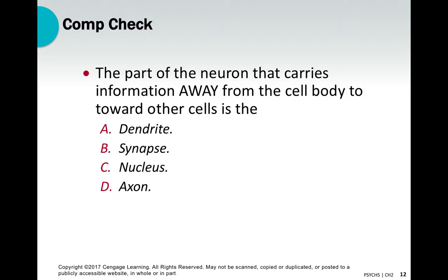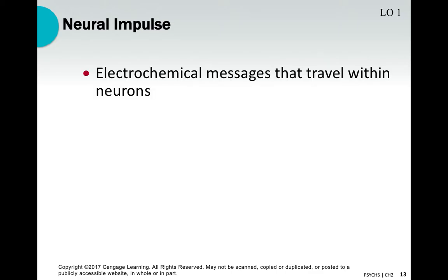Comprehension question: the part of the neuron that carries information away from the cell body toward other cells is — A) the dendrite, B) the synapse, C) the nucleus, or D) the axon. Pause the video to check your comprehension. The answer is D — the axon. The axon speaks, meaning it relays information away from the cell body toward other nerve cells, passing from the axon to the dendrite of the next cell.